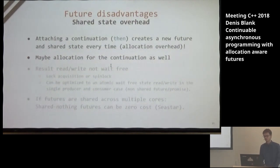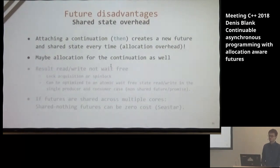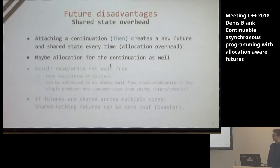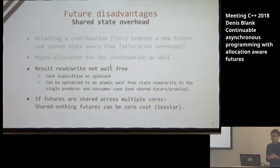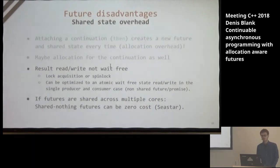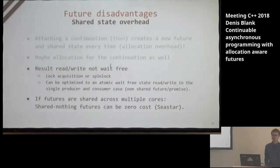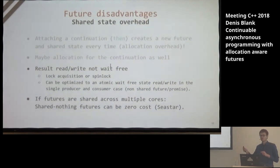The shared state comes with overhead. We need to store the continuation, and attaching a continuation always creates a new future and shared state — producing an immense amount of allocation overhead. We may also need to allocate for the continuation if it doesn't fit into the small buffer of our storage. Result reading and writing is not wait-free, which means we can't ensure the waiting proceeds in a fixed time because we usually require a lock acquisition or spin lock. This can be optimized for the single consumer/single producer case with wait-free operations — a non-shared future and promise where not more than one producer and one consumer access the shared state at a time.